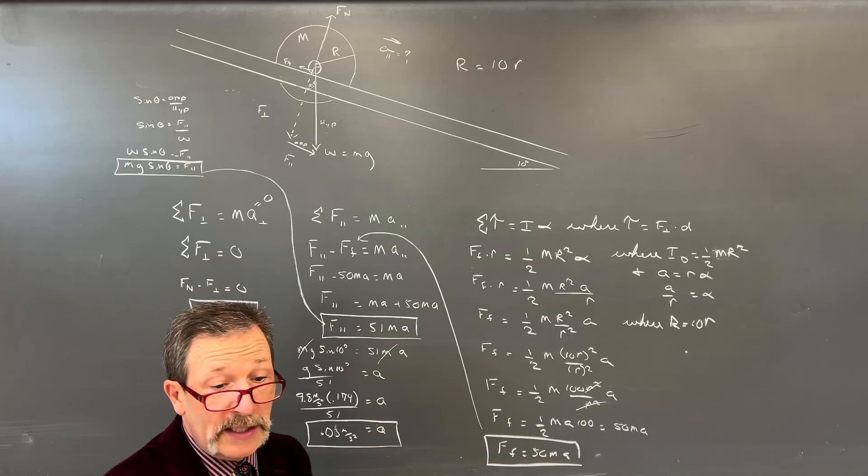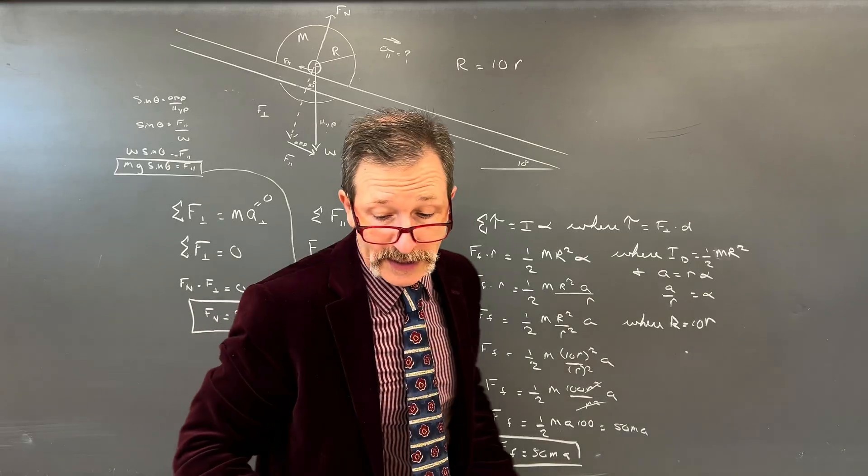So I could write sine of theta equals opposite all over my hypotenuse. Sine of theta equals opposite, which is force parallel all over our hypotenuse, which is going to be our weight. Force parallel equals weight sine of theta, also known as Mg sine of theta.